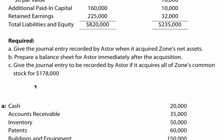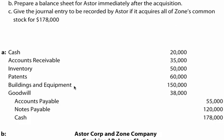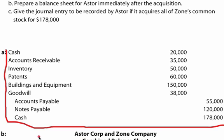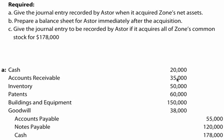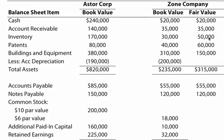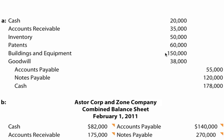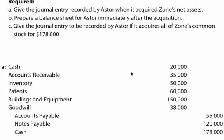To do Part A — give the journal entry recorded by Aster when it acquired Zone's net assets — this is the journal entry. Cash is $20,000; we acquired cash of $20,000. Accounts receivable $35,000. Inventory is $50,000. Patents $60,000. As you can see, the pattern here is that it's just the fair value of Zone's net assets that Aster acquired, and these assets are debits because they're assets that Aster is gaining.